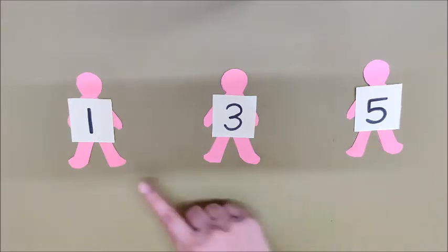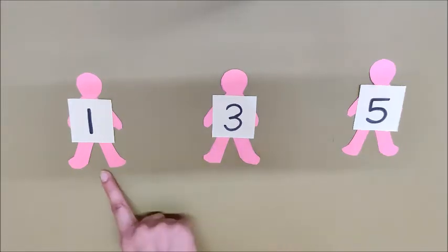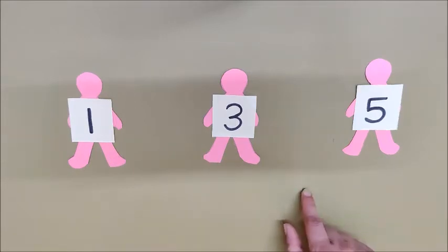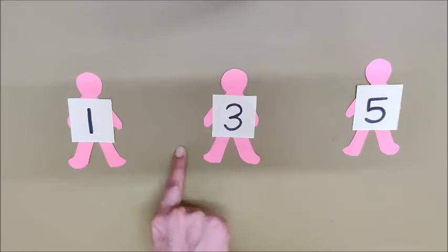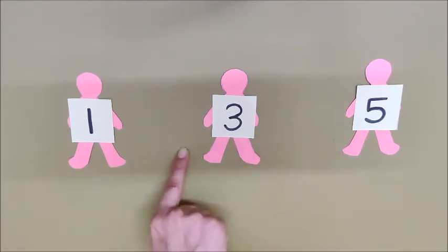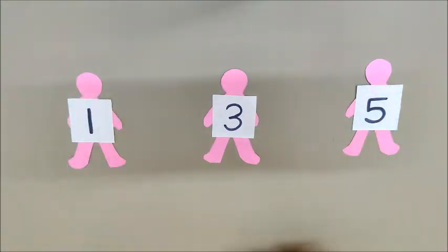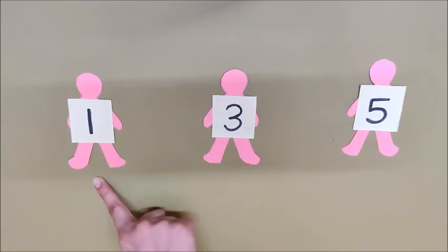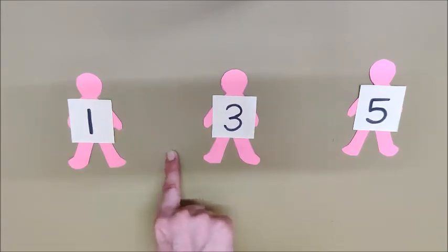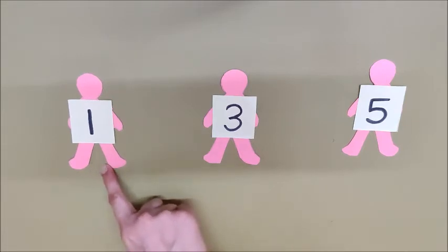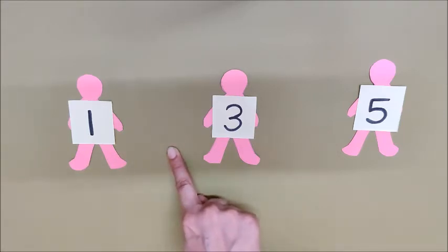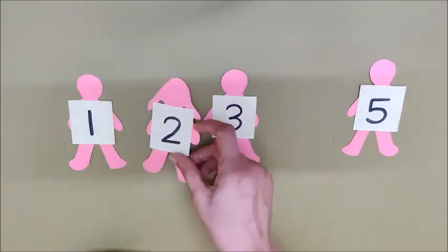Now let us say all these numbers again. One. Three. No, this is not correct. Three doesn't come after one. I think some numbers are missing in between. Missing means gaayab — kuch numbers yaan se gaayab hai. Children, what comes after one? Which number is missing here? Jho one ke baad mein aata hai? Tell me. Yes — number two. So here comes number two. Two was missing.